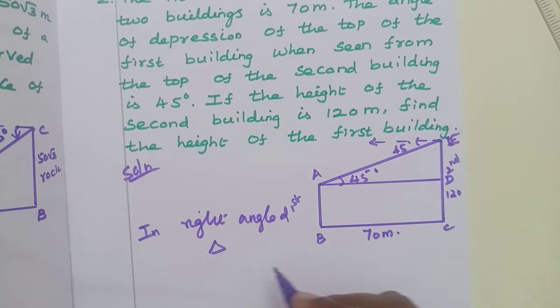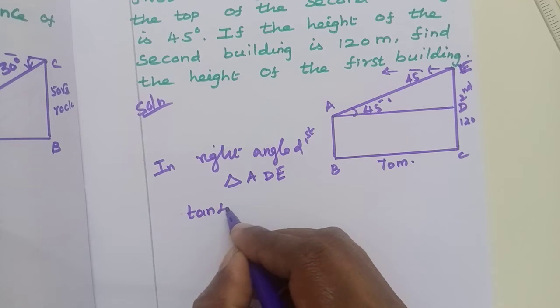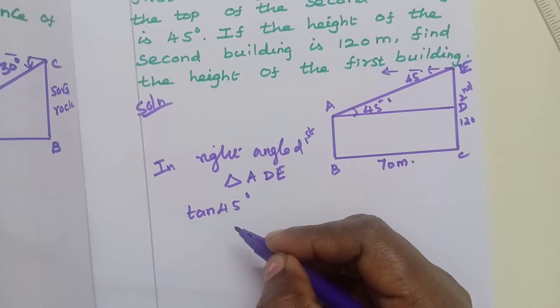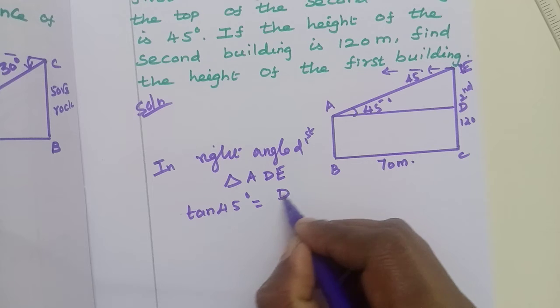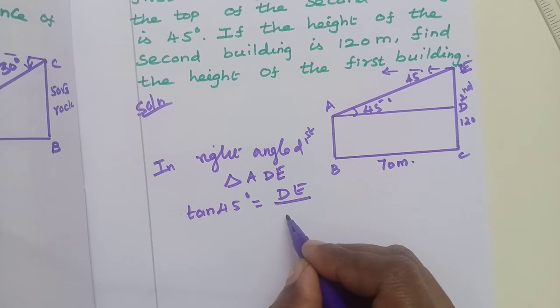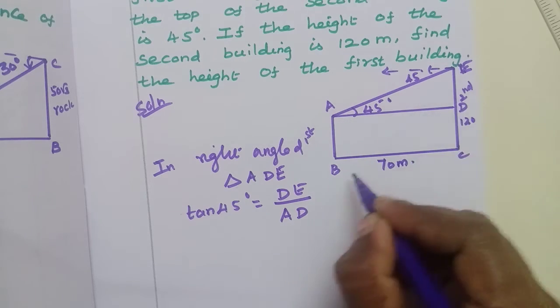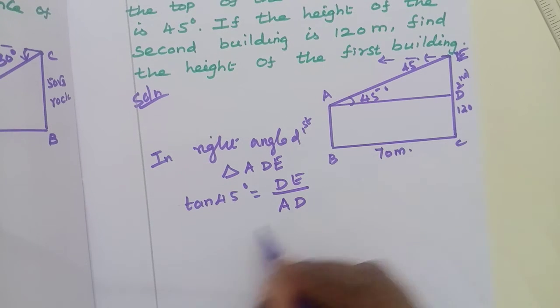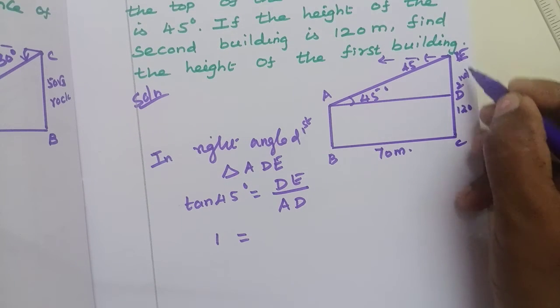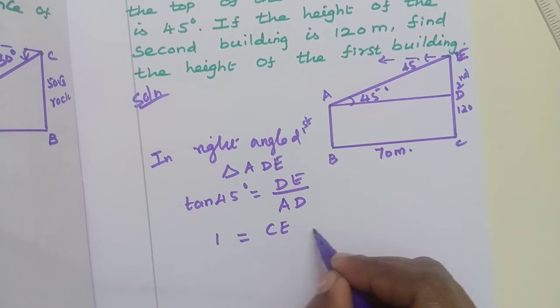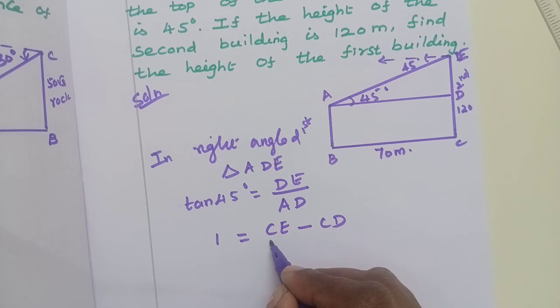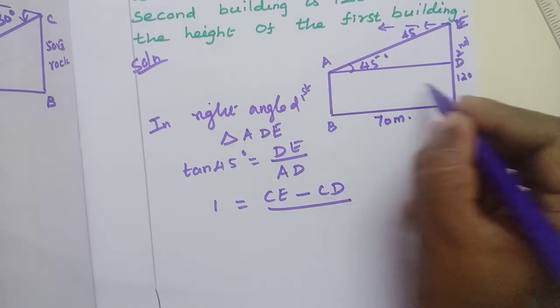tan 45 degrees equals 1. This equals opposite side DE divided by adjacent side AD. AD and BC are the same.